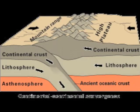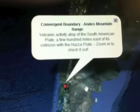Continental and continental convergent boundaries involve a collision between two continental plates and the formation of mountains. When they move toward each other, one plate's seafloor is subducted. An example of this would be the Andes Mountains.